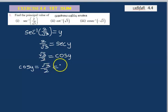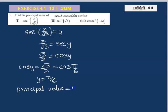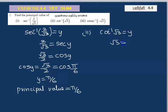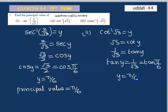Cosine y equals root 3 by 2, that is the principal value of 2 by root 3 is 5 by 6. The principal value of 1 by root 3: y equals tan 30 degrees, and 30 degrees in radians is 5 by 6. So y equals 5 by 6, and this is the principal value.